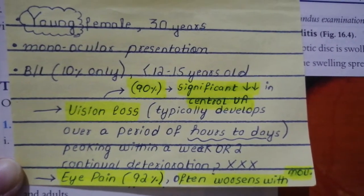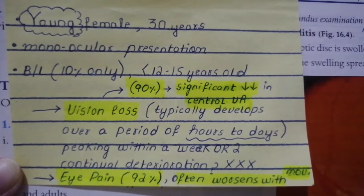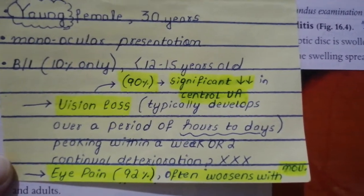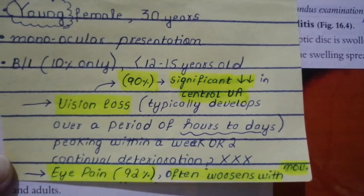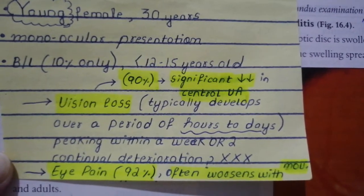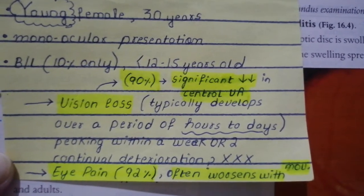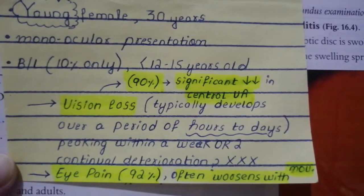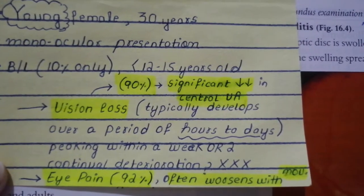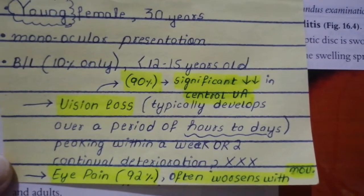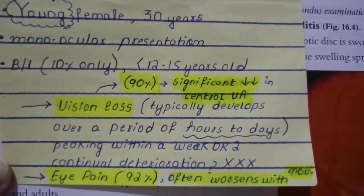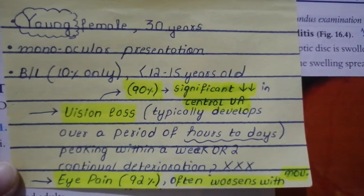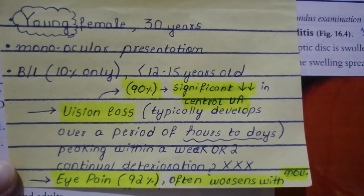Eye pain is normally aggravated with extra-ocular movement. When you do a fundoscopic examination in one-third of patients, the optic disc is blurred and swollen as well as hyperemic, giving a picture of papillitis. Because of the associated eye pain, papilledema can be excluded from the differential diagnosis.